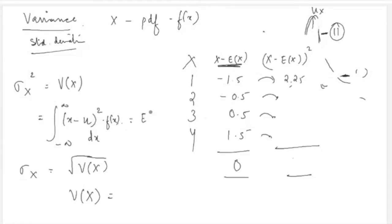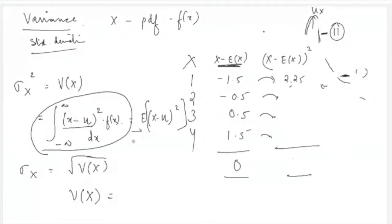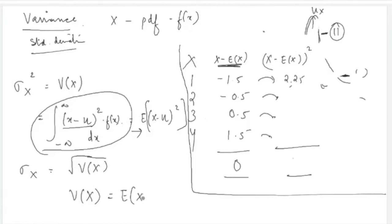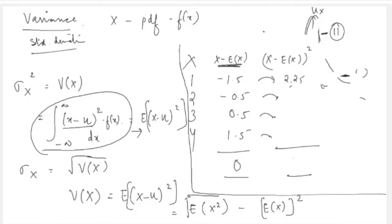Variance can also be written using the expansion: Var(X) = E[X²] − (E[X])². So you calculate E[X²] by integrating x²·f(x), and subtract the square of the mean E[X]. This alternative formula is useful when you already know E[X].